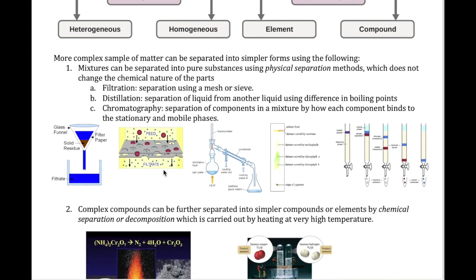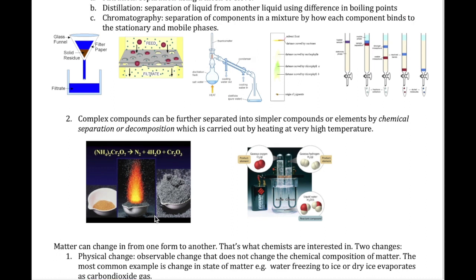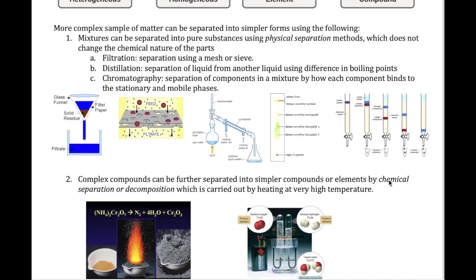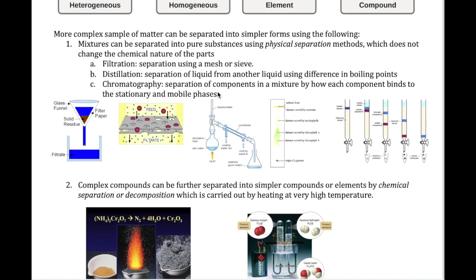There are other ways of separating things physically — distillation is another method you'll learn more about in organic chemistry. Compounds can be separated into elements, but because compounds and elements are connected by chemical bonds, this requires a chemical separation method. You're not going to be able to filter water to separate hydrogen from oxygen. To do that, you'd need to apply heat, electricity, or something requiring a lot more energy. These are called chemical separation methods — another word for them is decomposition.